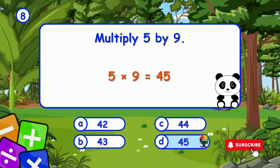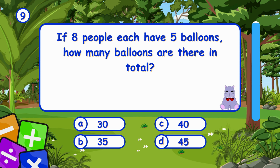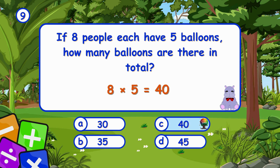Multiply 5 by 9. It's D, 45. Five times nine equals 45. If 8 people each have 5 balloons, how many balloons are there in total? It's C, 40. Eight times five equals 40 — 8 people with 5 balloons each have 40 balloons total.